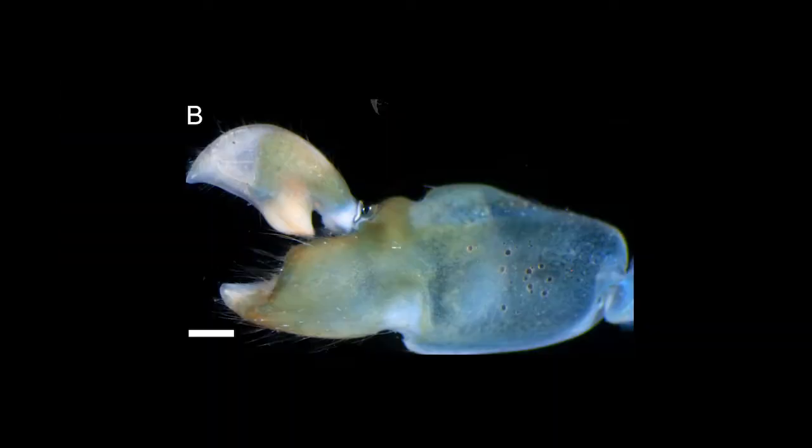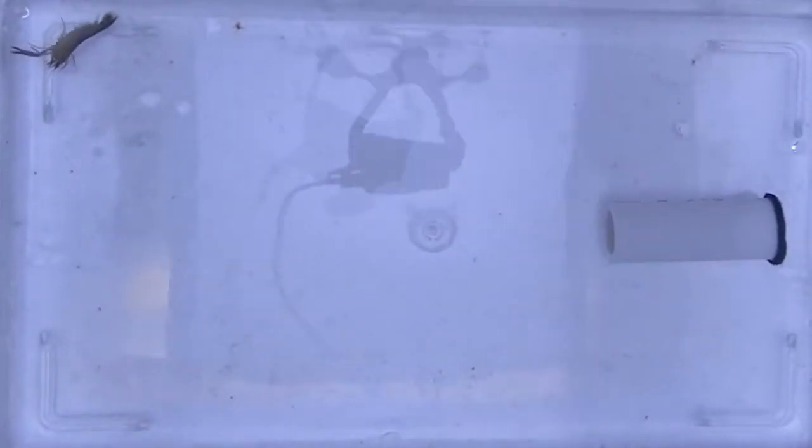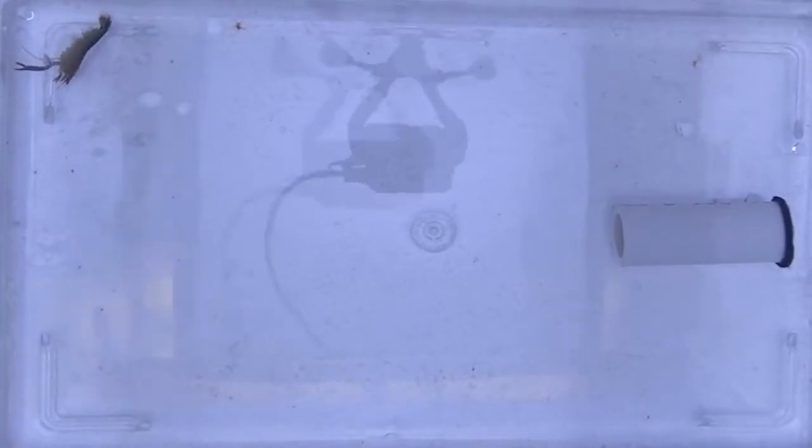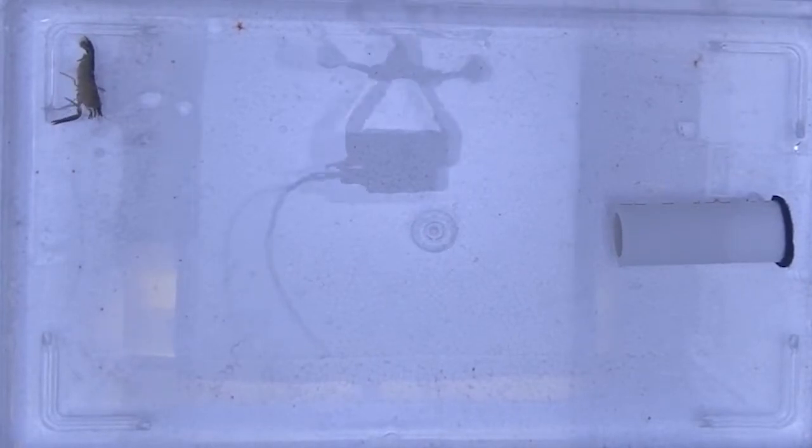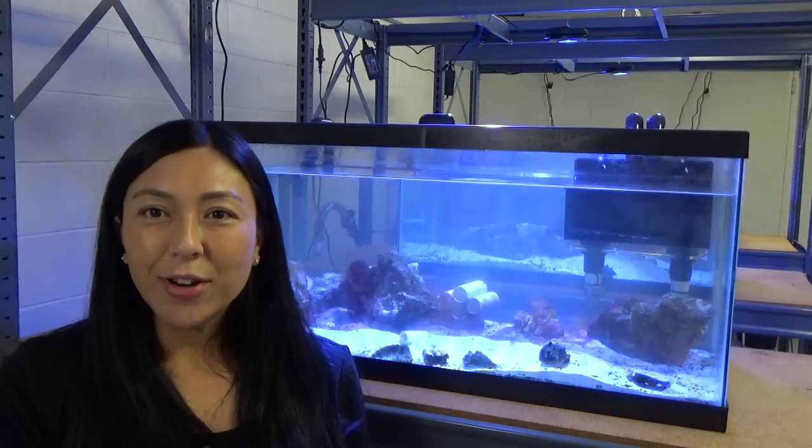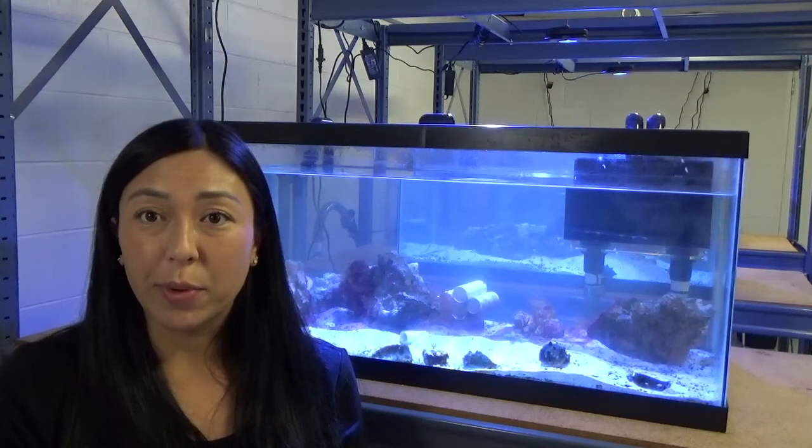Then, we expose snapping shrimp to shockwaves. Snapping shrimp whose orbital hoods we surgically removed took significantly longer to find their burrows and often displayed evidence of disorientation and loss of motor control. To better understand what happens to shockwaves as they interact with orbital hoods, we use miniature pressure sensors.